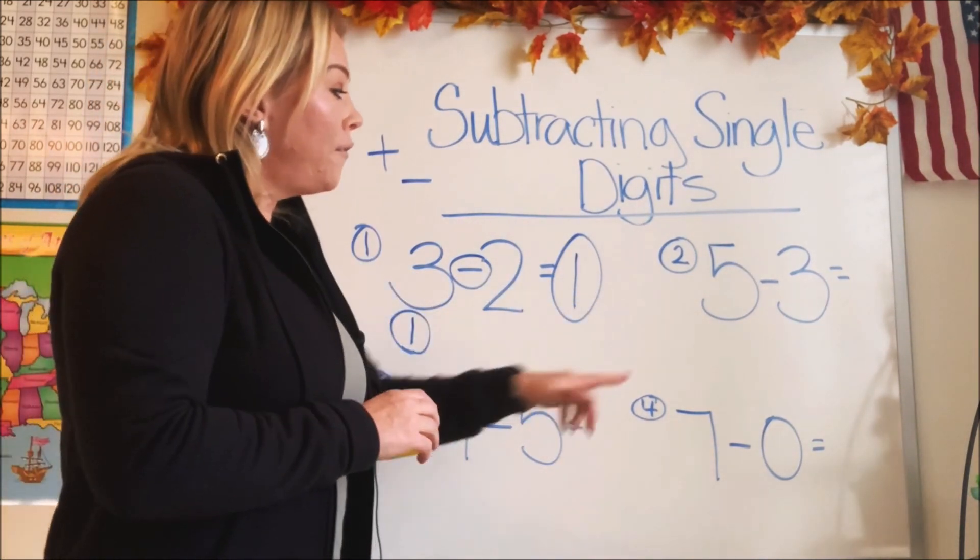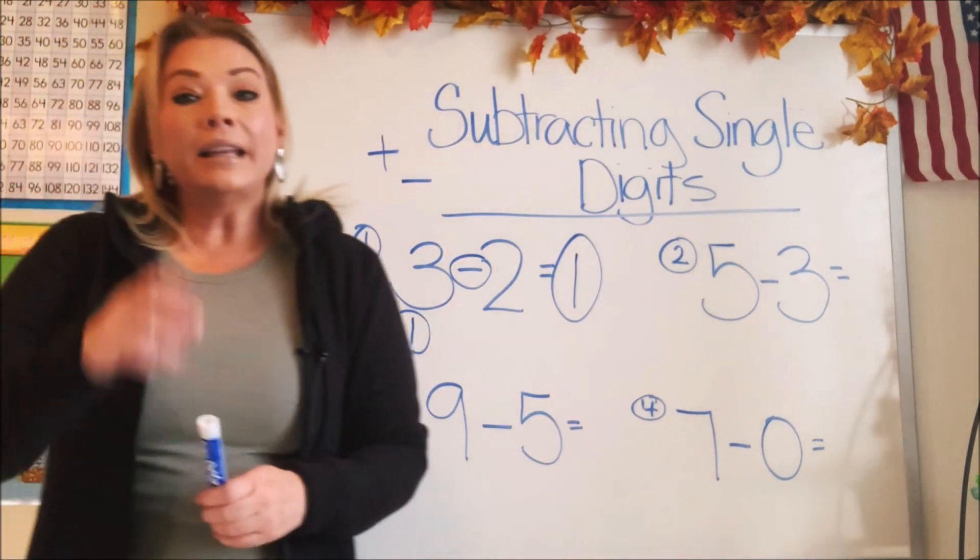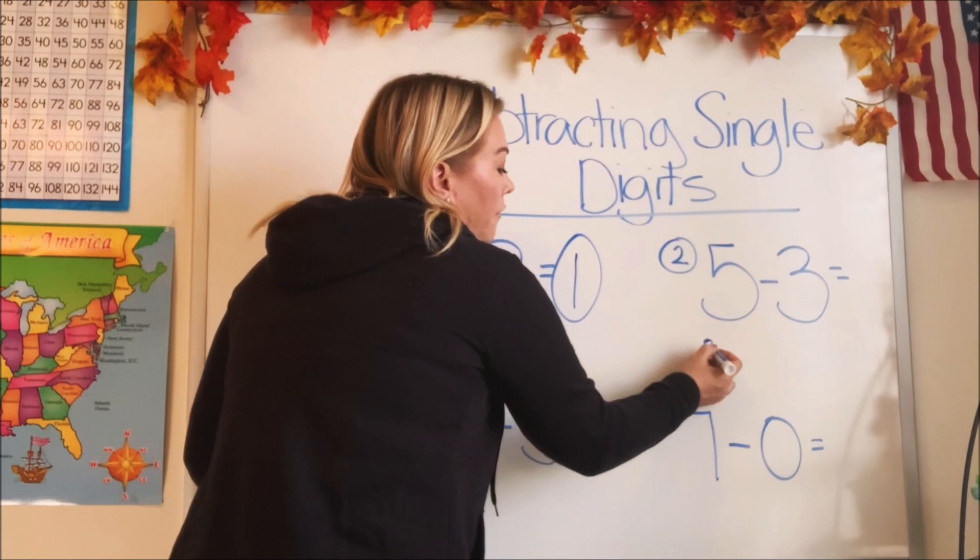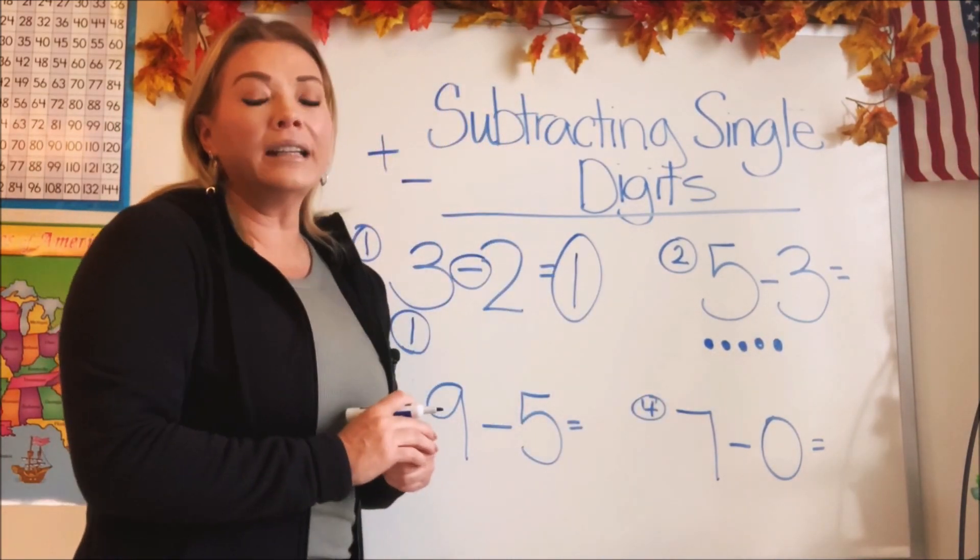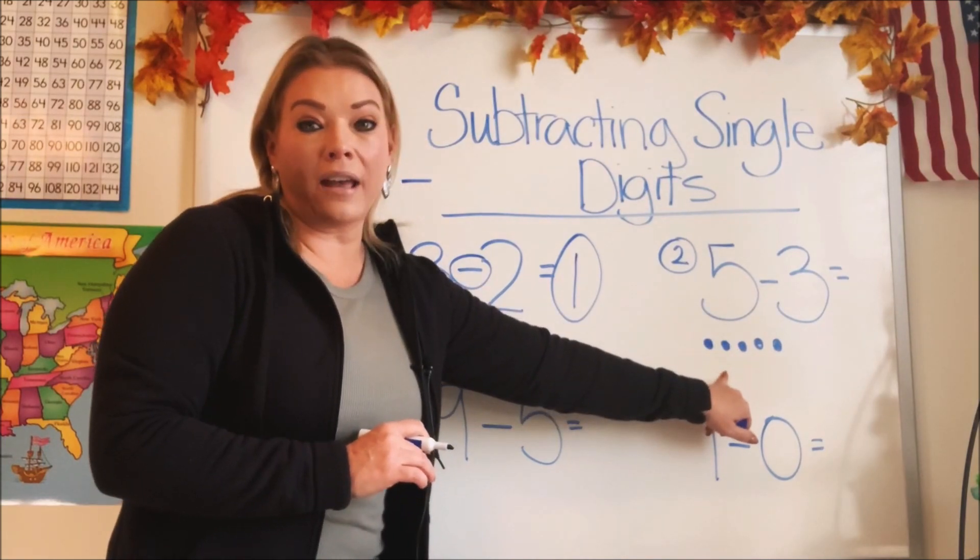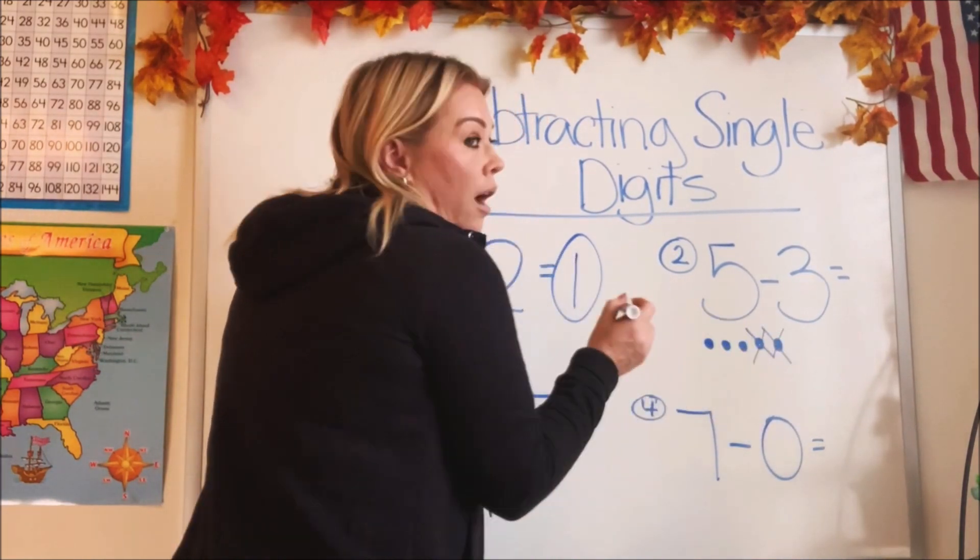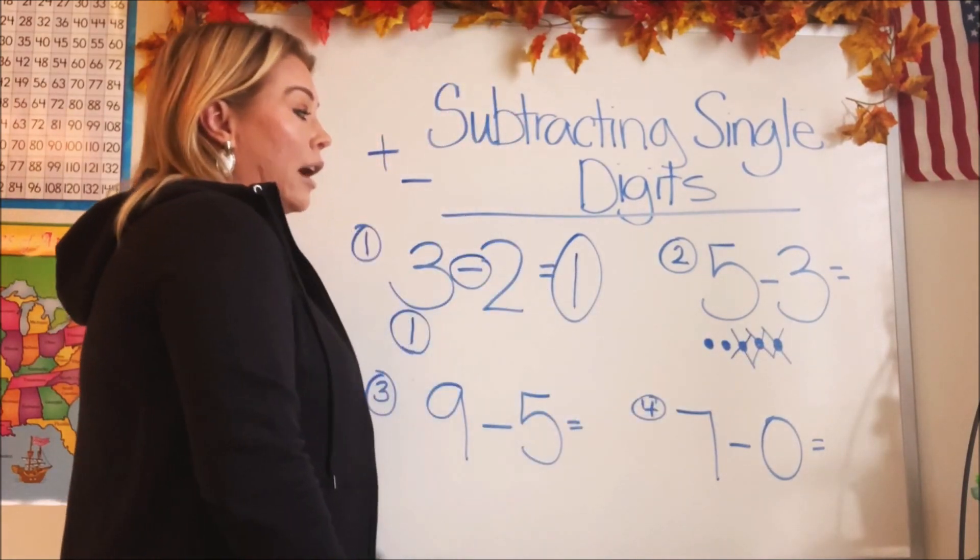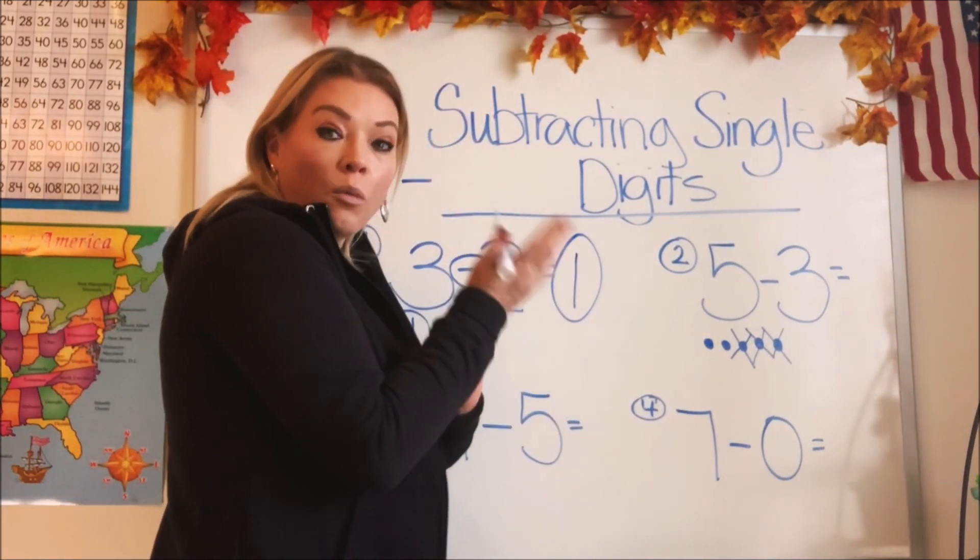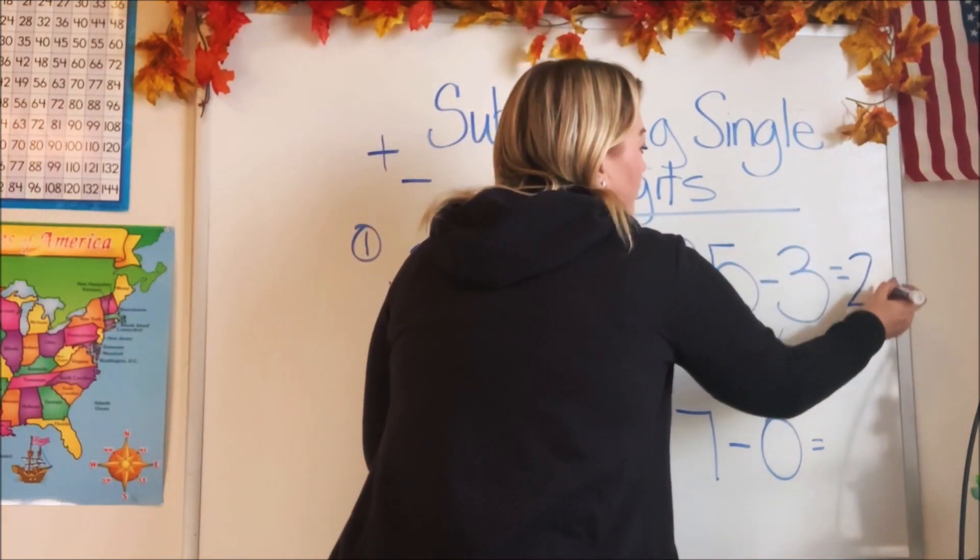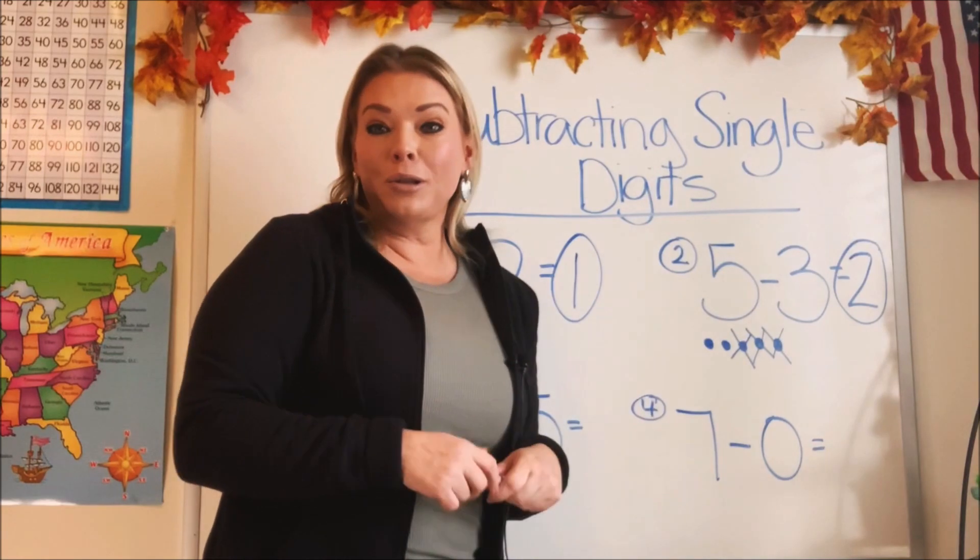Let's do number two. We have five subtract three. For this one, let's do little circles on the board, shall we? So we're going to draw five little circles. One, two, three, four, and five. And how many are we going to take away? What number are we taking away from five? We're taking away three. Good job. So instead of erasing them, let's just put an X through them. One, two, three. Now whatever's left over is our answer. So how many do we have left over? We have one, two left over. So what's our answer? Two. And let's circle it so we can see that that's our answer. So five subtract or take away three is two. Good job.